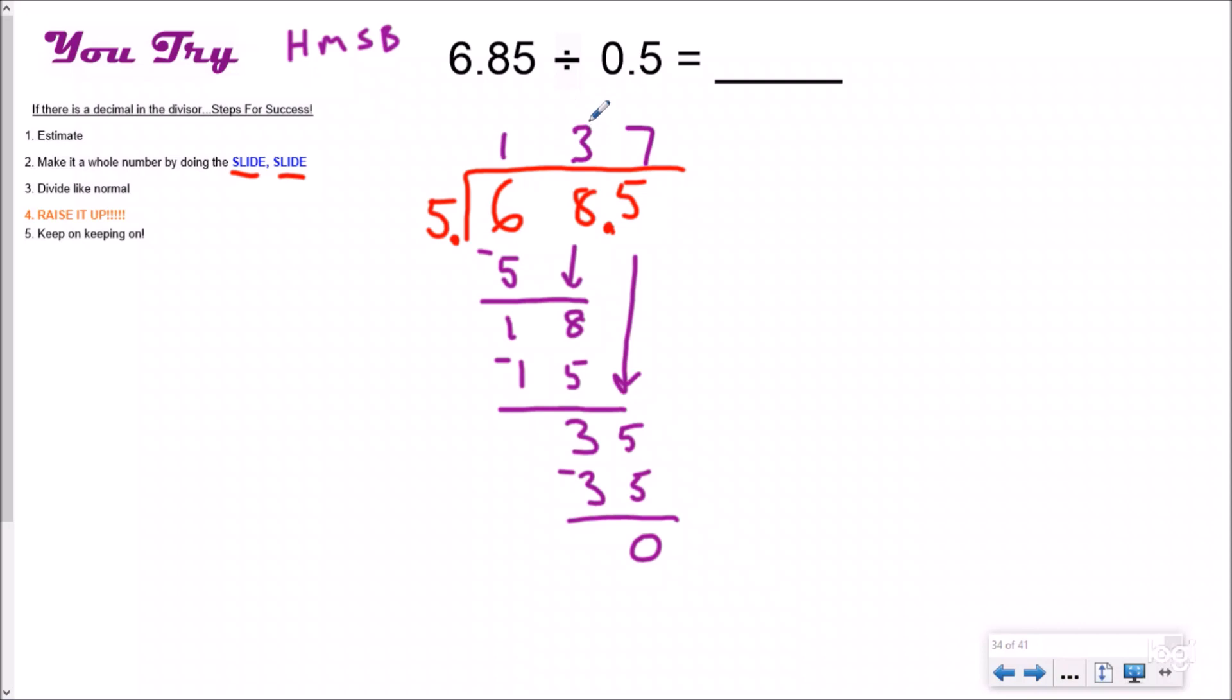And so I'm at first thinking my answer might be one hundred thirty-seven. But what I realized is I forgot to put my decimal to the roof. When it's in the dividend, you raise it to the roof. And so my answer is thirteen and seven tenths. And so this is just a great way to do decimals using your standard algorithm. It makes it very easy.